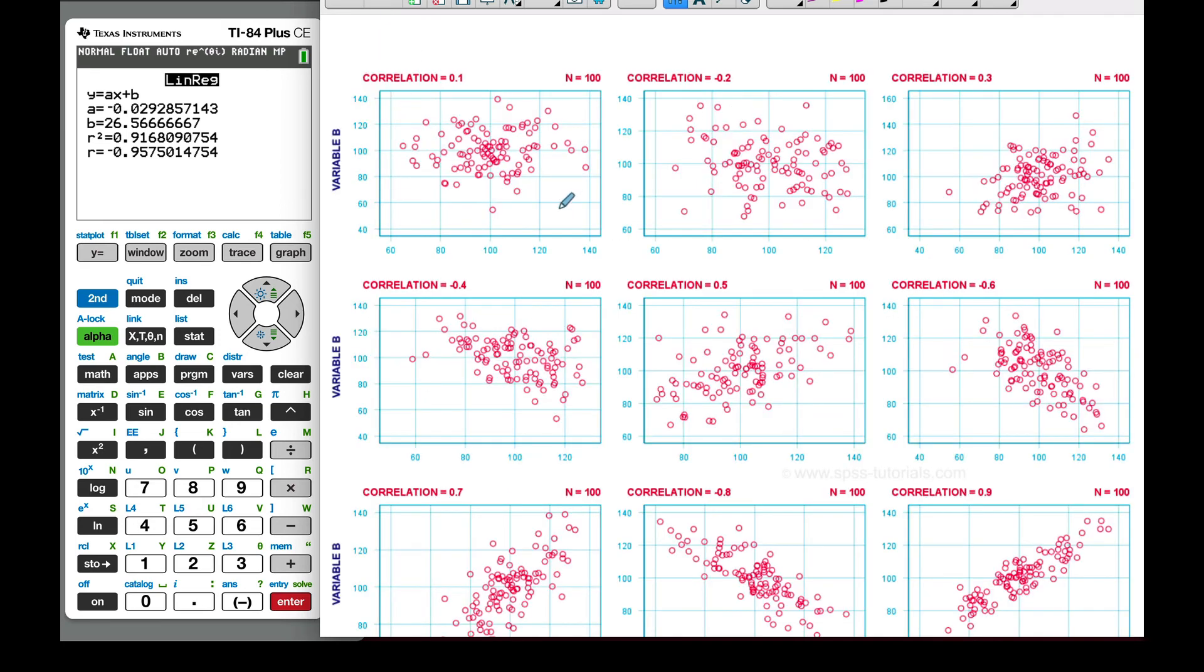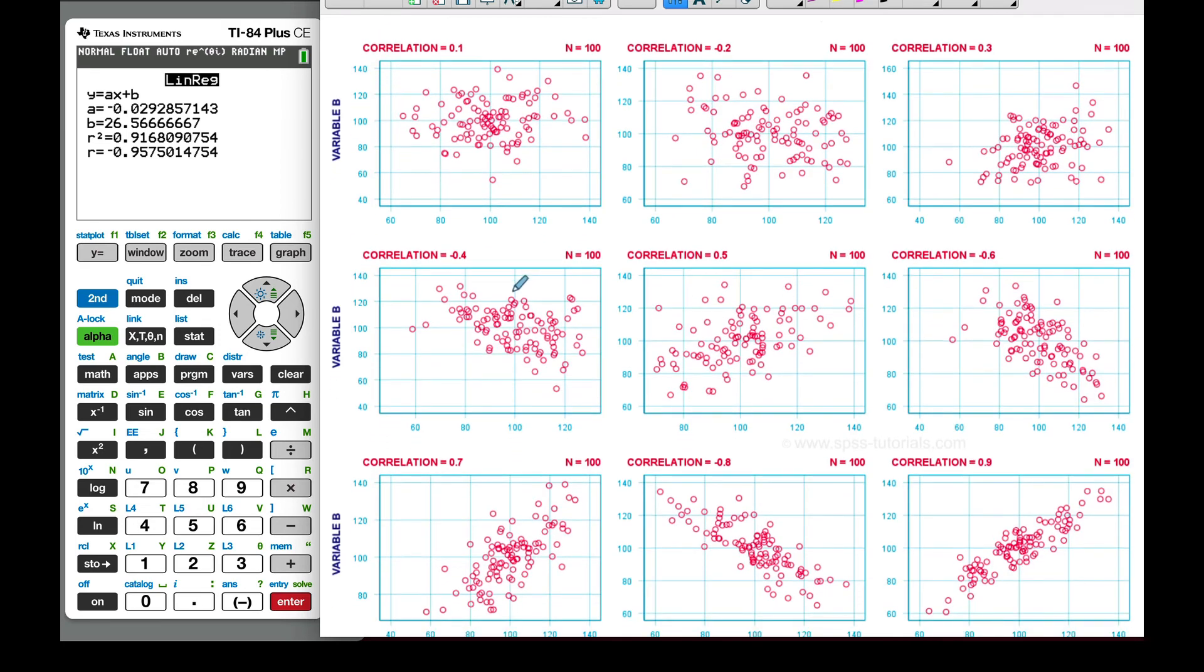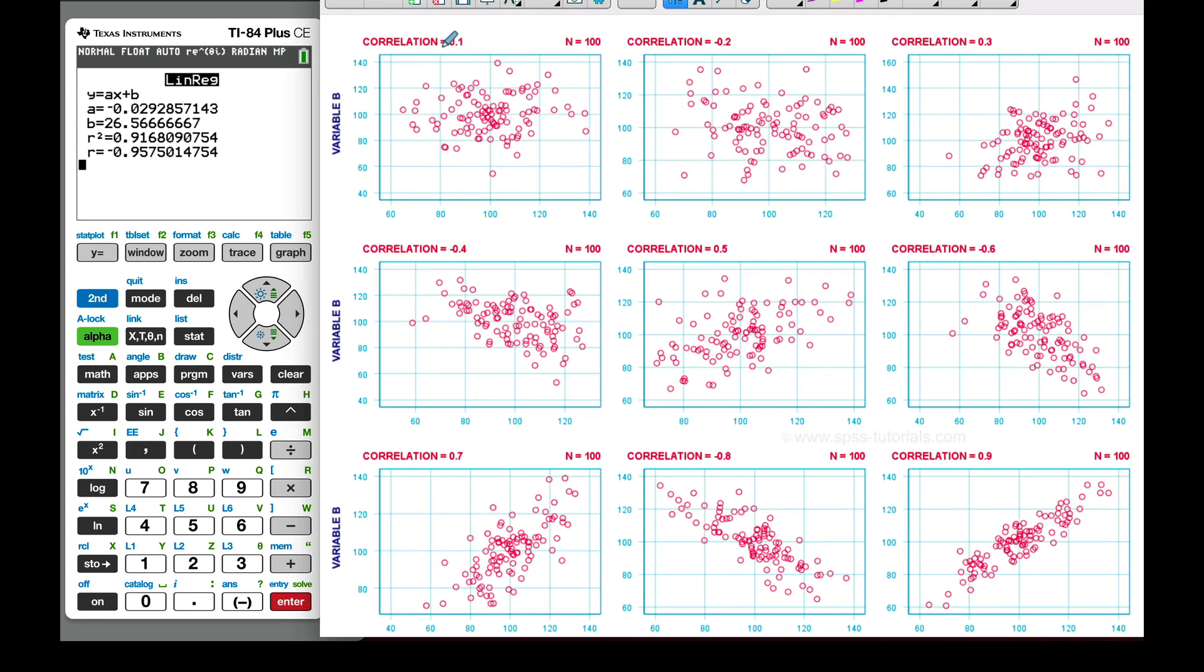We can also look here. Here is another diagram that shows all our different correlations. So this is 0.1. It looks like a big blob, so there's very little correlation. This is negative 0.2. Again, it's just a blob, very little association between the X and Y. Here's a 0.3. It's getting to be more linear. This is the negative 0.4, so it's getting to be more of a linear relationship.